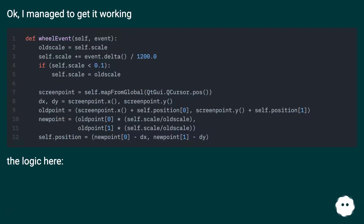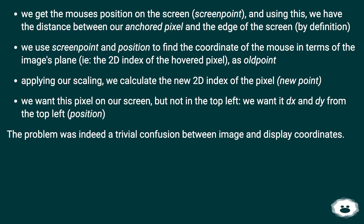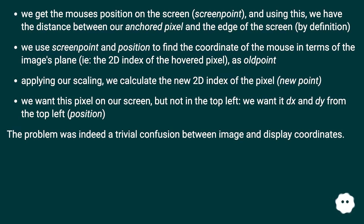I managed to get it working. The logic: we get the mouse's position on the screen as 'screen_point', giving us the distance between our anchored pixel and the edge of the screen. We use 'screen_point' and 'position' to find the coordinate of the mouse in terms of the image's plane — the 2D index of the hovered pixel — as 'old_point'. Applying our scaling, we calculate the new 2D index of the pixel as 'new_point'. We want this pixel on our screen not at the top left, but dx and dy from the top left. The problem was indeed a trivial confusion between image and display coordinates.